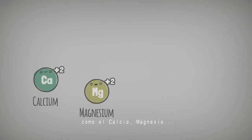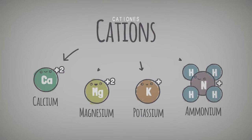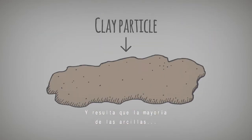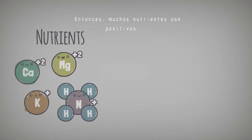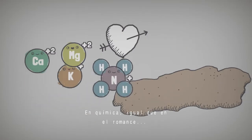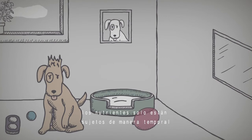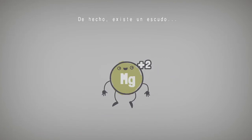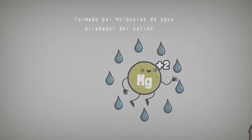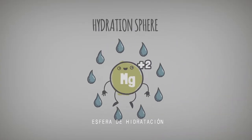Nutrients like calcium, magnesium, potassium, and ammonium are all positively charged chemicals, or cations. And as it turns out, most clay particles and organic matter in soil are negatively charged. So, many nutrients are positive and particles are negative — in chemistry, as in romance, opposites attract. No more leaching. But, like the balloon on the wall, the nutrients are only temporarily held. There's actually a shell of water molecules that forms around the cation, preventing it from bonding permanently. This shell is often called a hydration sphere.